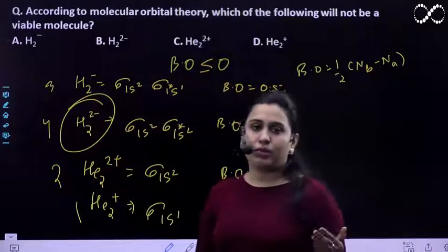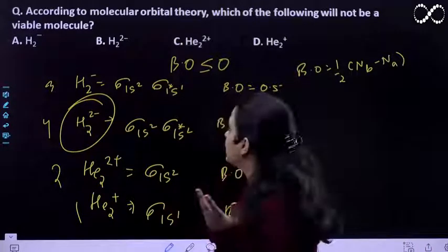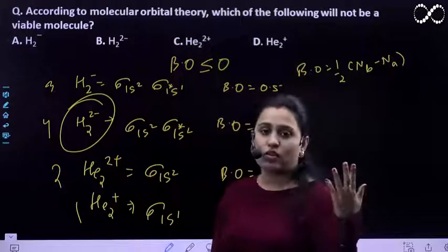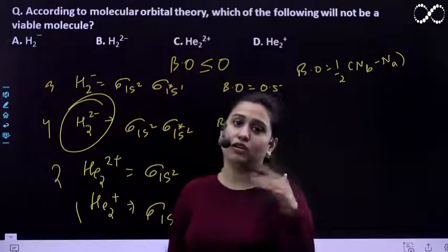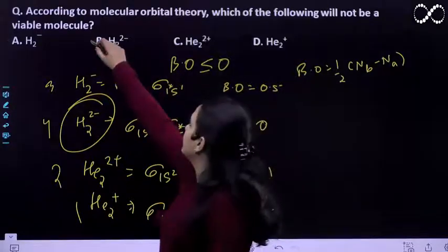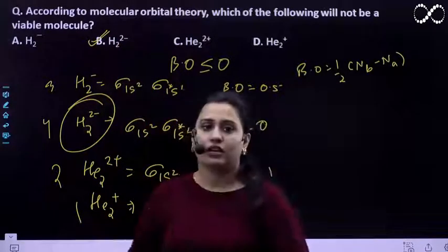Therefore what we need to do is we just need to see ke MOT ke according bond order less than 0 aa raha hai ya 0 aa raha hai, toh wooh molecule viable nahi hooga. The answer is B. Thank you.